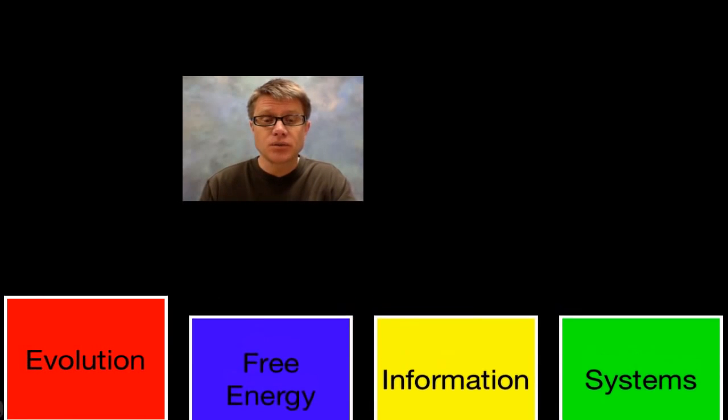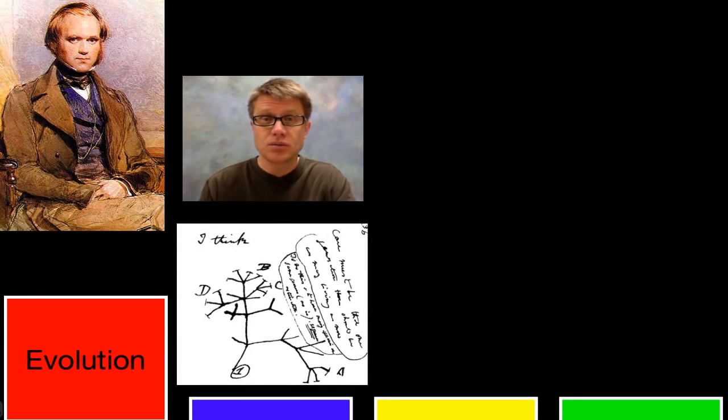And so the first one we'll start with is evolution. This is where I always like to start the year. And this right here is a picture of Charles Darwin early in life when he was starting to formulate his ideas on natural selection. And if you ask people what did Charles Darwin do, lots of times they will just say oh he invented biology or he invented evolution. And that's really not super accurate.